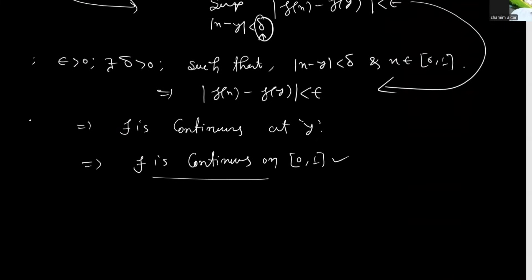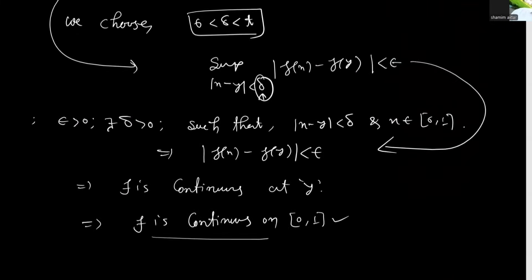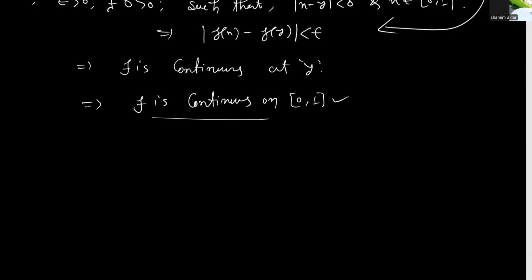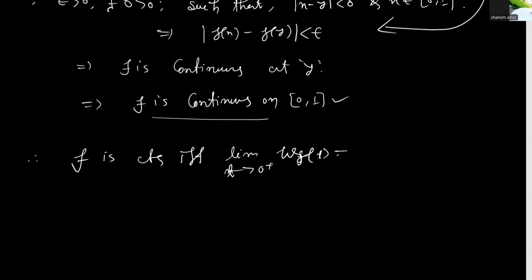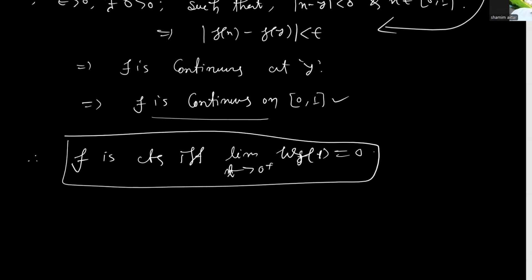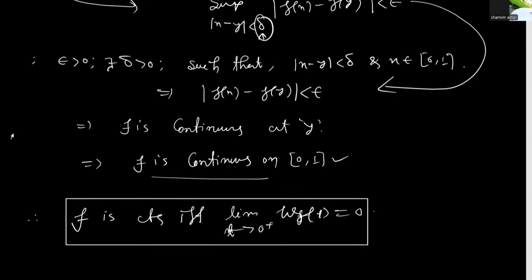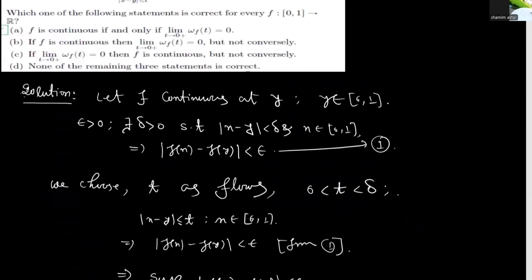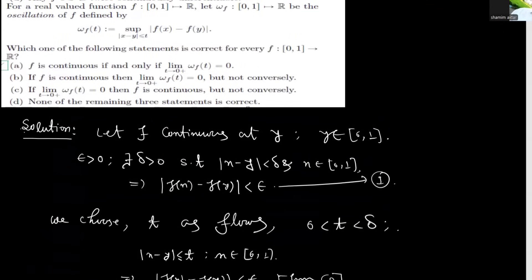The converse part is also true. Therefore, f is continuous if and only if the limit as t tends to 0+ of wf(t) equals 0. So the answer to the question is A.